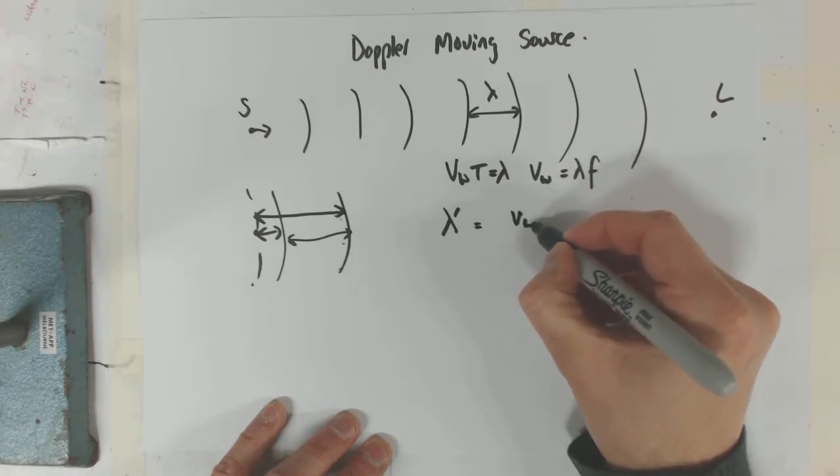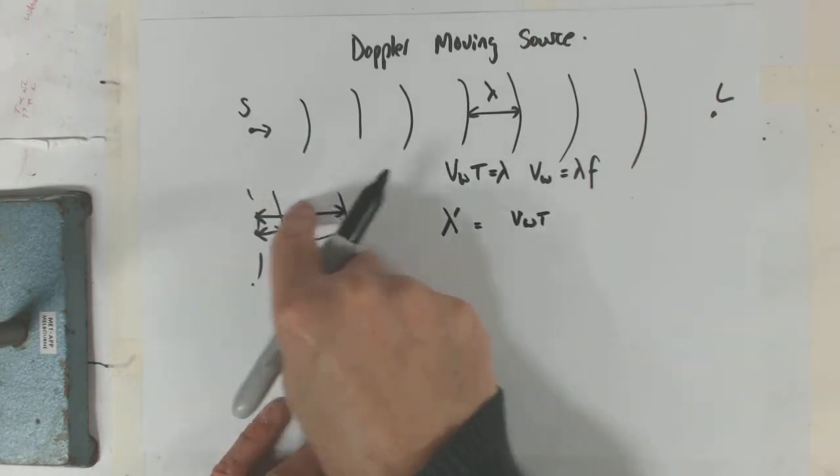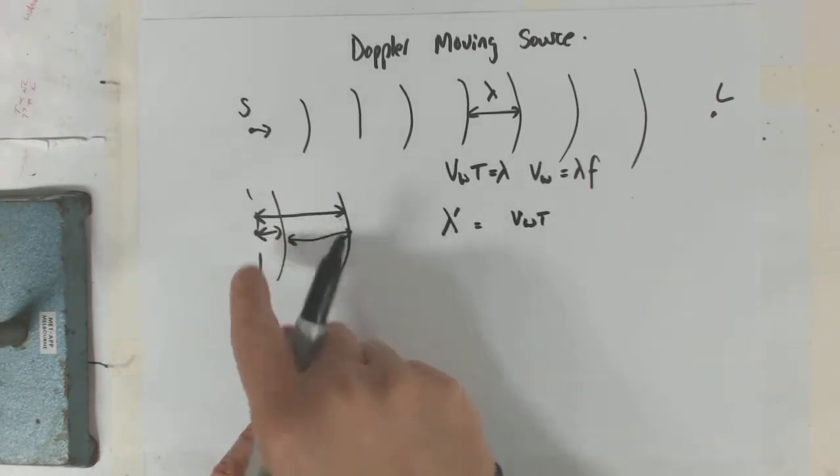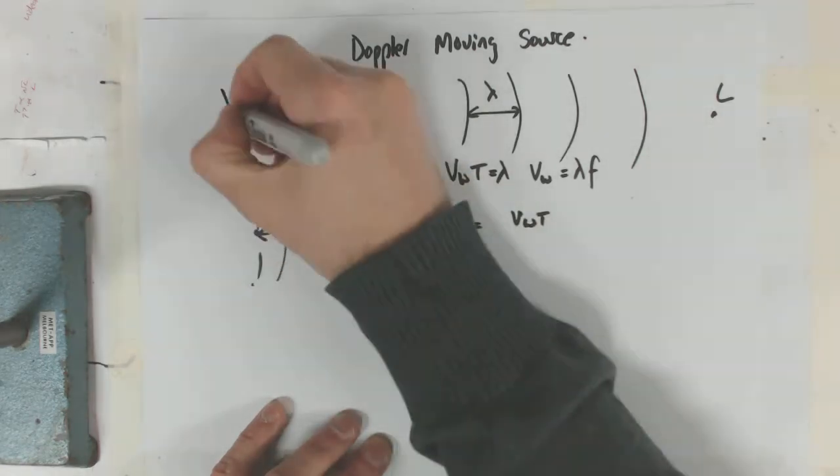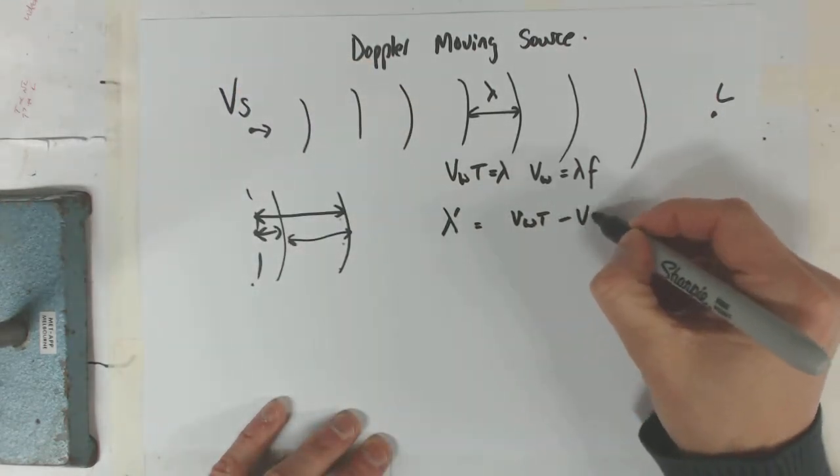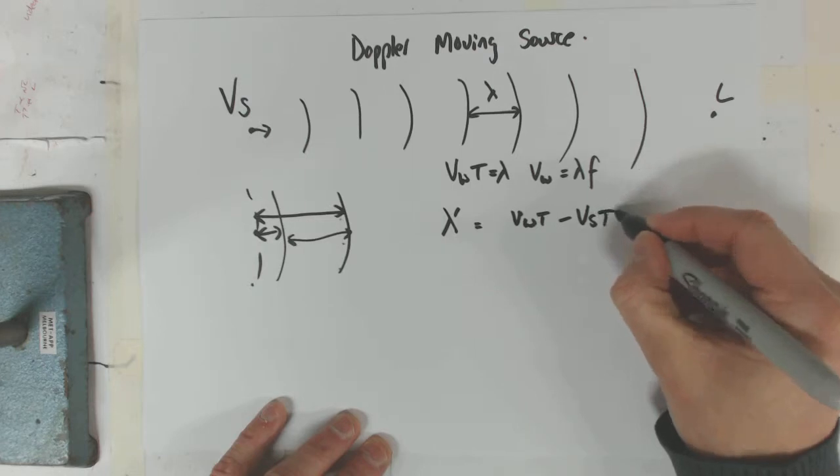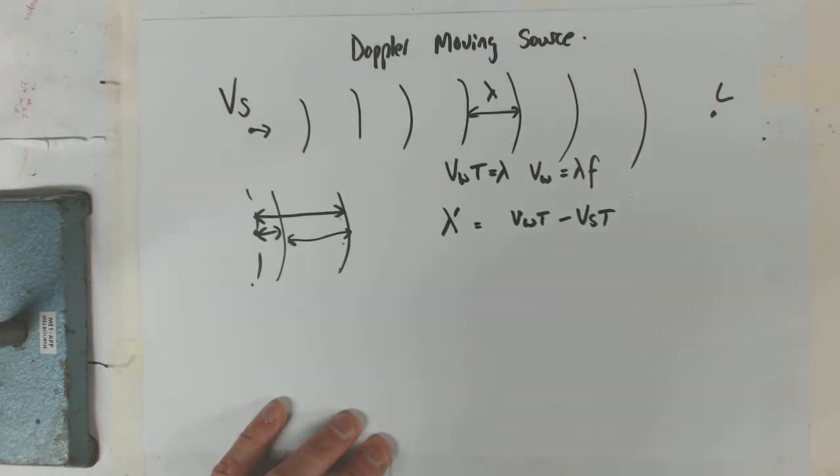It's going to be equal to VWT, the whole wavelength distance, minus VS. We'll call the velocity of the source VS, minus VS times T, because it was during the whole period that we were looking at. Right, so that's the new wavelength. We can obviously simplify that: VW minus VS, times T.